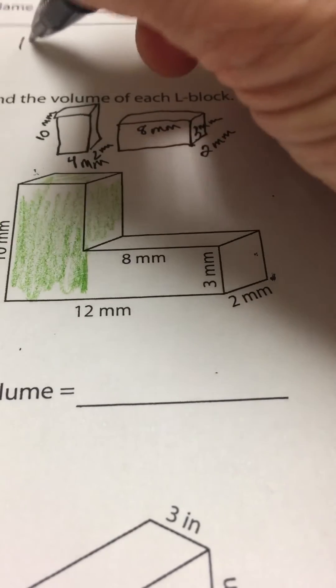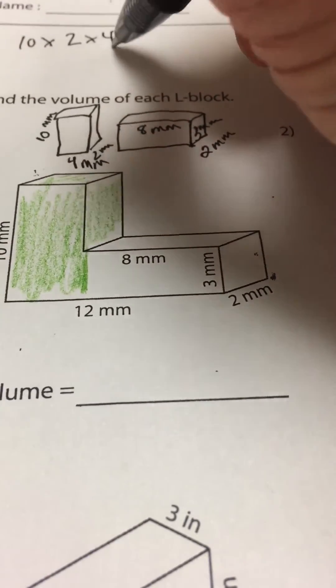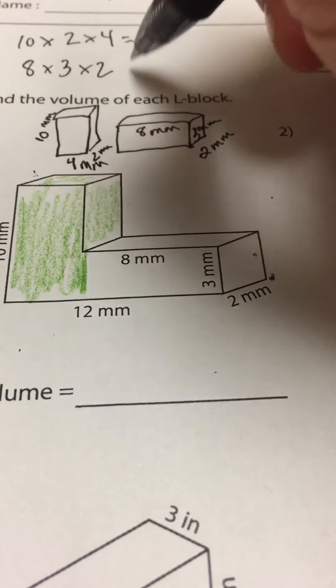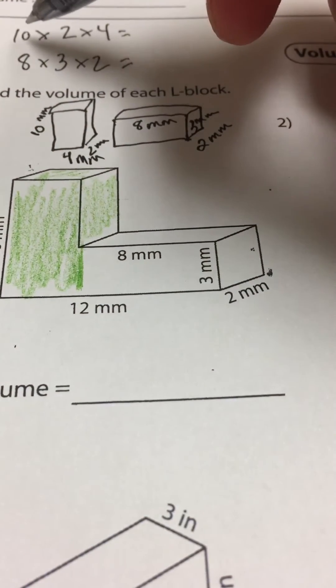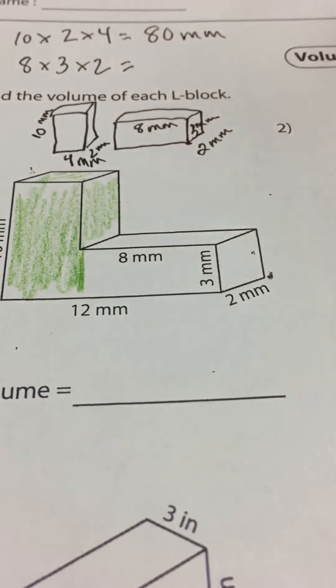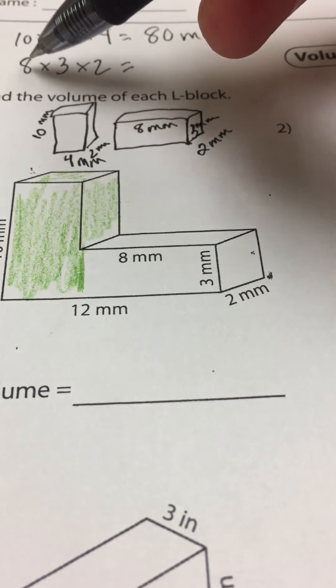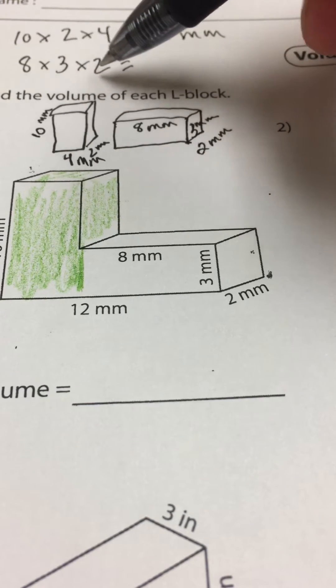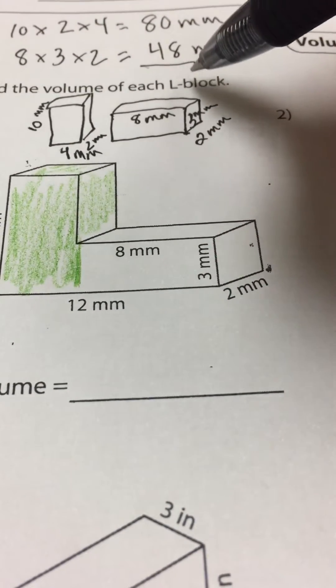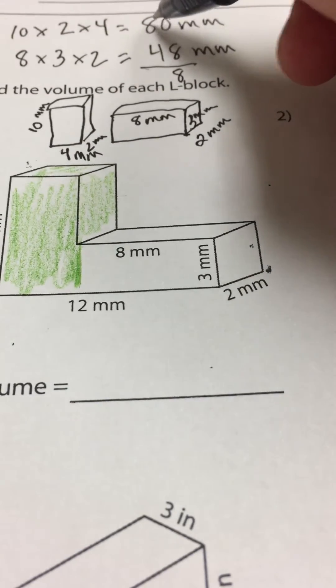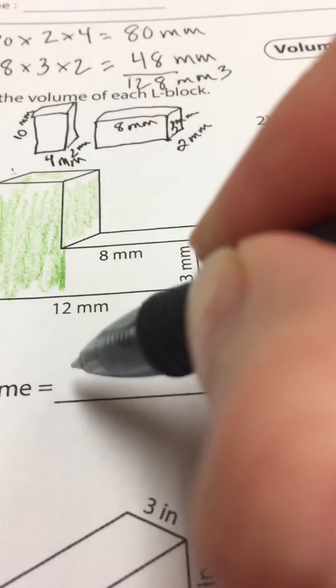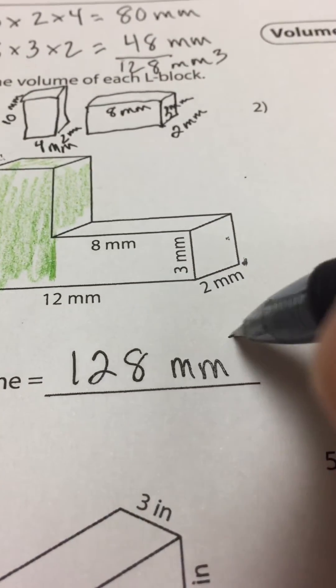We are going to be multiplying our first shape is 10 by 2 by 4. And our second shape, we have the dimensions 8 by 3 by 2. Let's solve. 10 times 2 is 20, and 20 times 4 is 80 millimeters. Next we have 8 times 3, 24, and 24 times 2 is 48 millimeters. Let's add those together. 8 and 0 is 8, and 8 and 4 is 12. 128 cubic millimeters. We're going to write that in. 128 cubic millimeters.